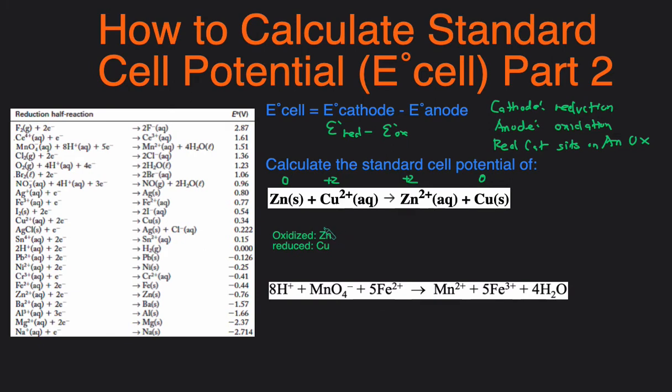Because you can see that the Zn went from zero to positive 2 and then Cu went from positive 2 to zero. So now let's take a look at the potentials for zinc and copper. For zinc, you can find the half reaction for zinc here. You can see that zinc's potential is negative 0.76. So let's write that over here, negative 0.76.